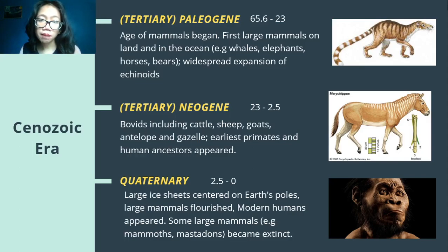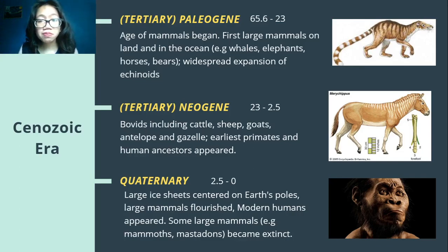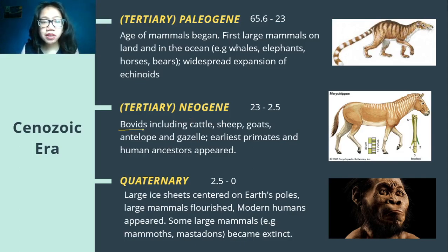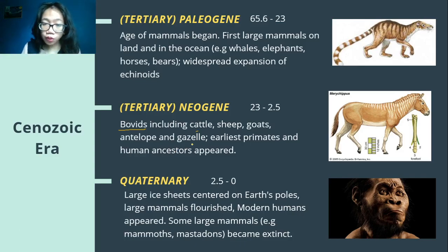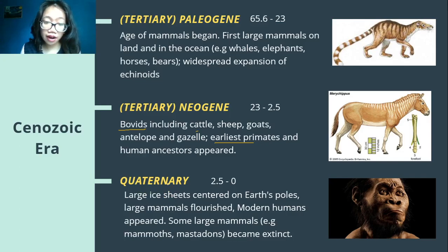So the Paleogene Period was the age of the mammals. Then we have the Neogene. Remember that during the Cretaceous Period, grasses evolved. The planet was covered by grass because the grass survived the Cretaceous event. Because of that, the mammals evolved alongside the grass. Bovids — meaning grass eaters, including cattle, sheep, goats, antelope, and gazelle — appeared. And then the earliest primates and human ancestors appeared in the Neogene, but formal modern human beings didn't appear until the Quaternary Period.